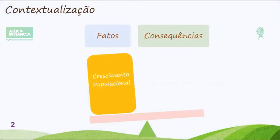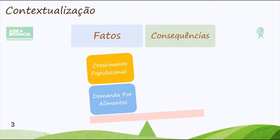Para trazer uma contextualização básica: a população mundial tem se desenvolvido, tem crescido muito. Há expectativas de que no ano de 2050 tenhamos alcançado 8 bilhões de pessoas no mundo. É muita gente para ser alimentada. Um dos impactos diretos desse crescimento populacional é a demanda por alimentos. Se pensarmos que o Brasil tem a característica de ser um país agrícola, produtor de alimentos que fornece para grande parte do mundo, os impactos dessa demanda são muito maiores aqui.